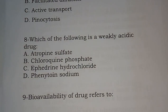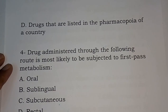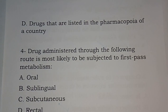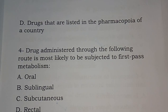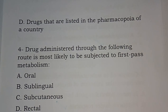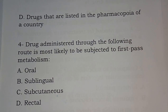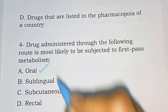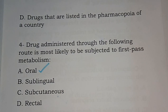Question number four: a drug administered through which of the following routes is most likely to be subjected to first-pass metabolism? Options are: oral, sublingual, subcutaneous, rectal. The correct answer is option A — oral. Compared to sublingual, subcutaneous, and rectal, the oral route is more subjected to first-pass metabolism.